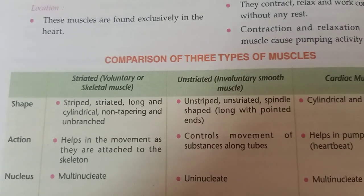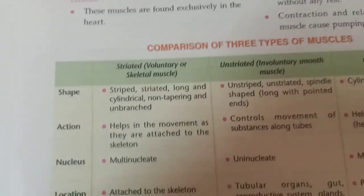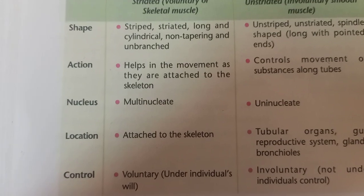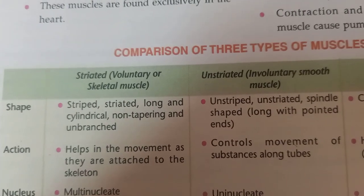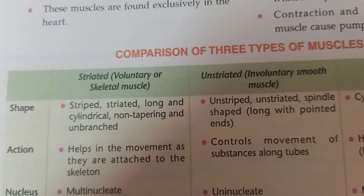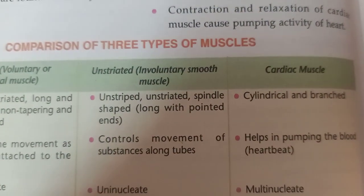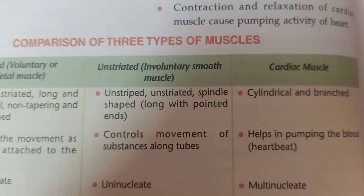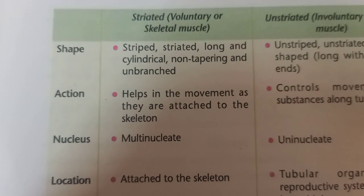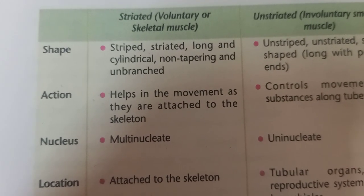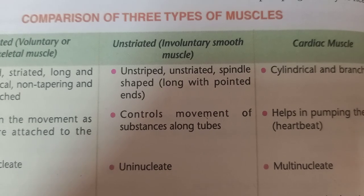Now a comparison of the three types of muscles — striated, smooth (unstriated), and cardiac — on the basis of shape, action, nucleus, location, and control. On shape: striated muscles are striped, long, cylindrical, non-tapering, and unbranched. Unstriated muscles are spindle-shaped with pointed ends. Cardiac muscles are cylindrical and branched. On action: striated muscles help in movement as they are attached to the skeleton; smooth muscles control movement of substances along tubes; cardiac muscles help in pumping blood.